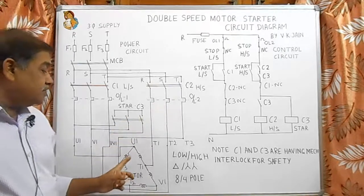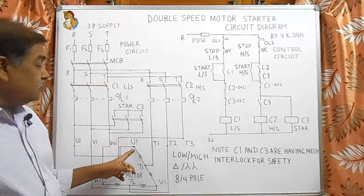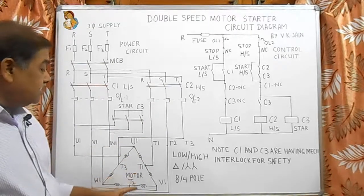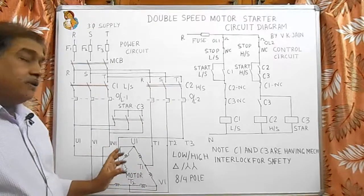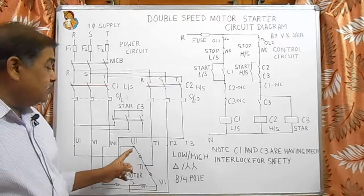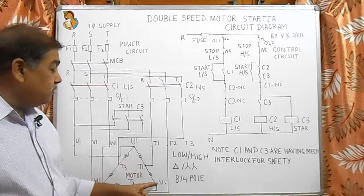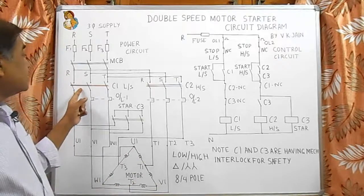In double speed motor there are six points: U1, V1, W1 and T1, T2, T3. For running at low speed we have to give supply to point U1, V1 and W1 with the help of contactor C1.